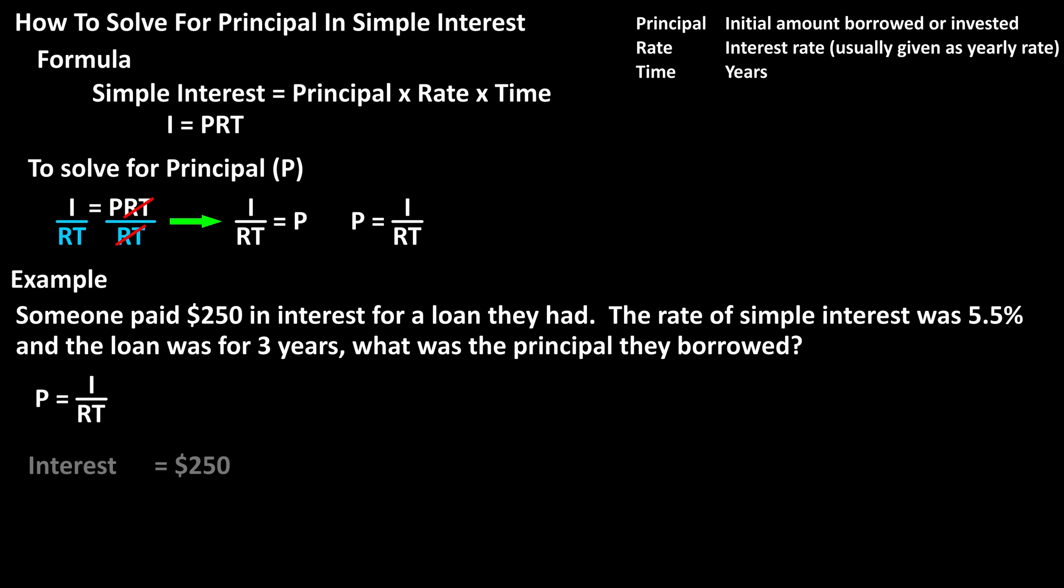Using our formula, the interest is $250, the yearly simple interest rate was 5.5%, which we must convert to a decimal. To do that, we drop the percent sign and move the decimal two places to the left to get .055, and the time is 3, for 3 years.